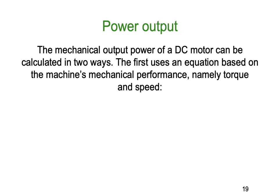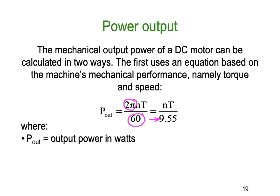The mechanical output power of a DC motor can be calculated two ways. The first uses torque and speed: P_out = 2πNT / 60, or equivalently NT / 9.55, where the constants 2π and 60 are combined into the denominator 9.55. Output power is in watts, speed N is in RPM, and torque T is in newton metres.